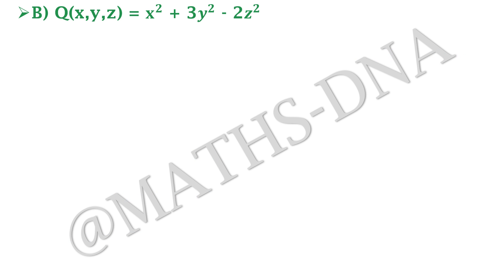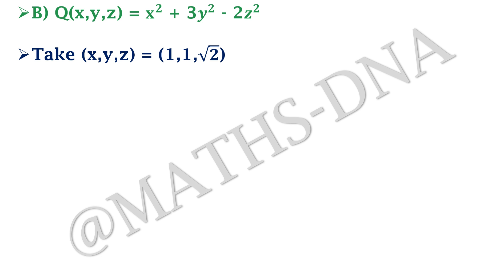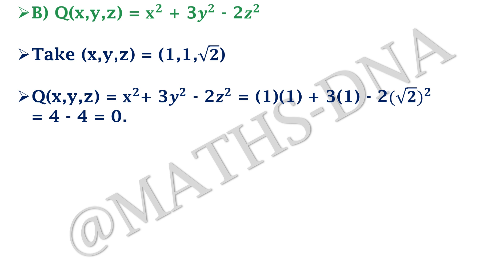For Option B, Q(X,Y,Z) = X² + 3Y² − 2Z². Take (X,Y,Z) = (1, 1, √2). Many students make a mistake here — they are not comfortable taking irrational numbers as a solution. But remember, you have to take numbers from R, so irrational numbers are allowed. Then Q = 1 + 3 − 2(√2)² = 4 − 4 = 0. So Option B is also a correct answer.